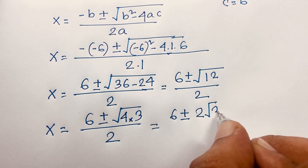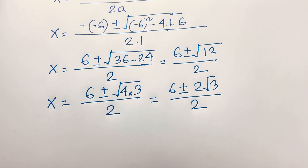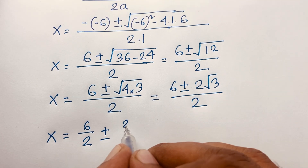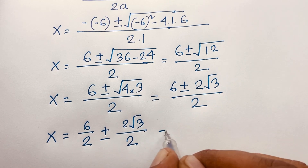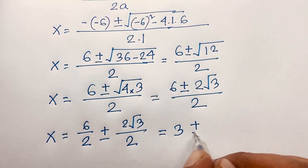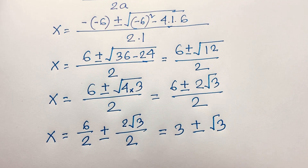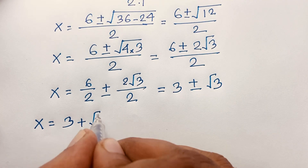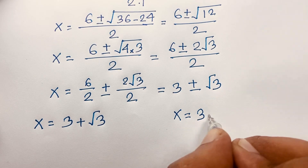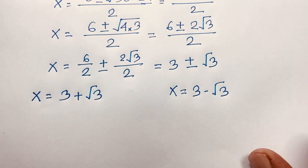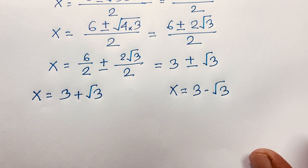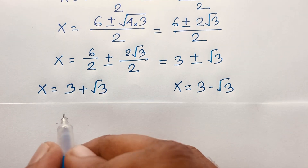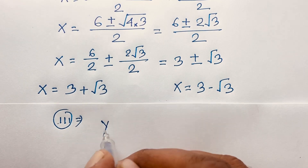So x equals 6 plus or minus square root of 4 times 3, over 2. The square root of 4 is 2, so this becomes 6 plus or minus 2 root 3, over 2. Separating the fraction: 6 over 2 is 3, and plus or minus 2 root 3 over 2 — the 2s cancel — giving plus or minus root 3. So x equals 3 plus square root 3, and x equals 3 minus square root 3.